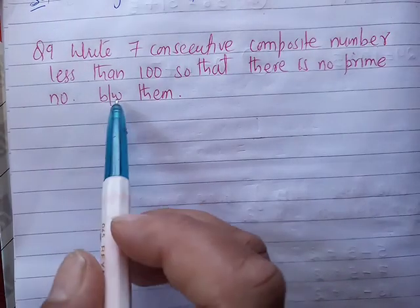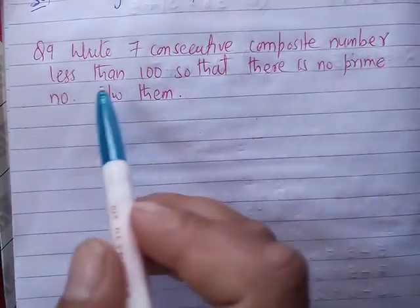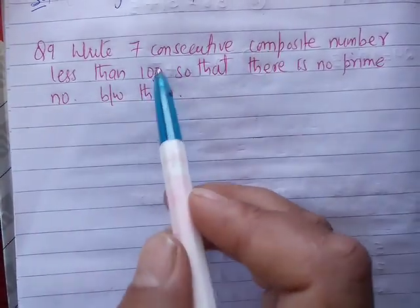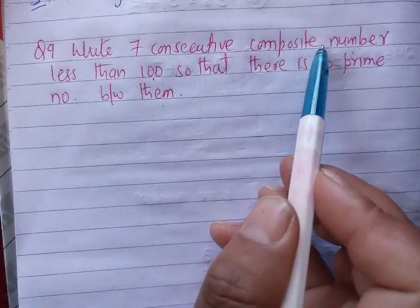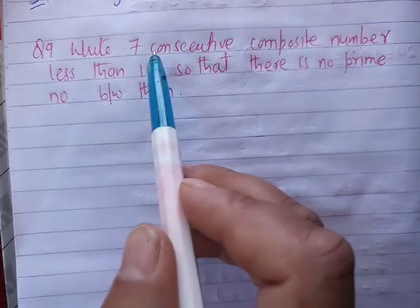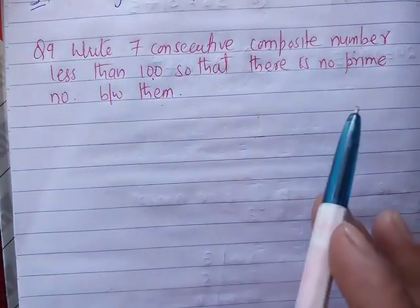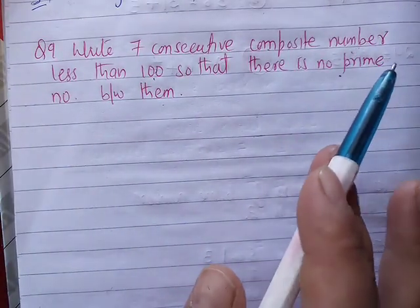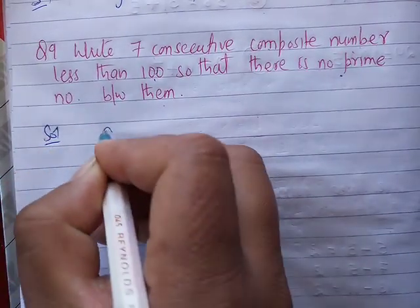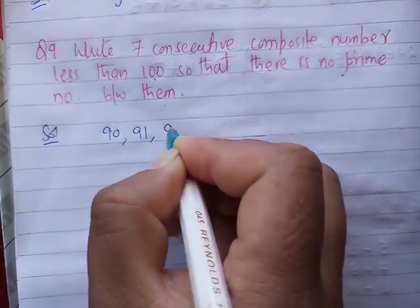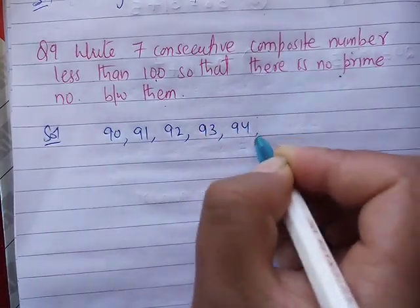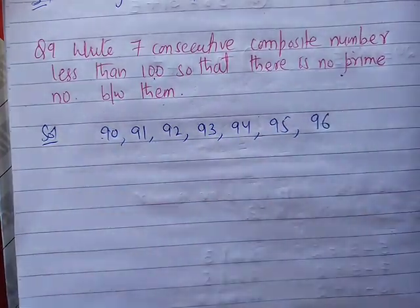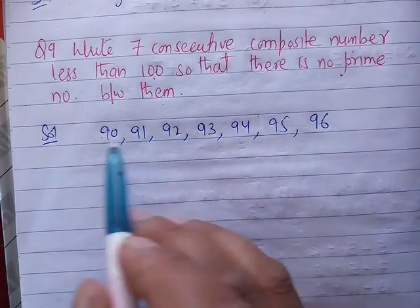Question number nine: Write seven consecutive composite numbers less than 100 so that there is no prime number between them. A composite number means it has more factors than just 1 and itself. The answer is: 90, 91, 92, 93, 94, 95, and 96. These seven consecutive numbers are all composite numbers.